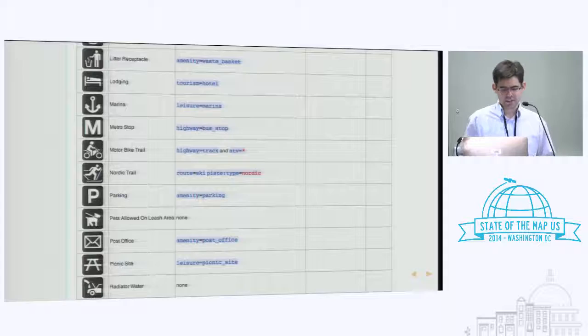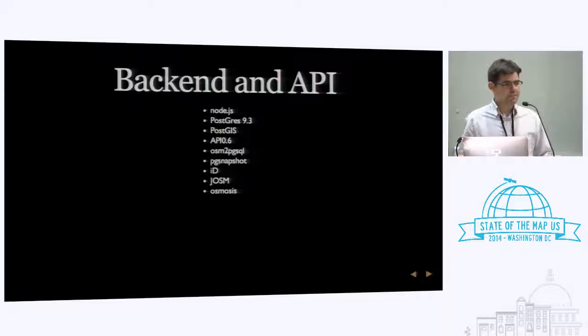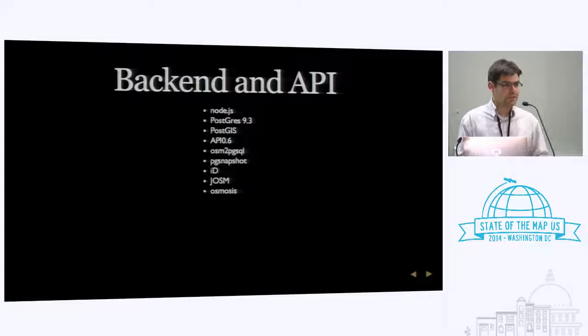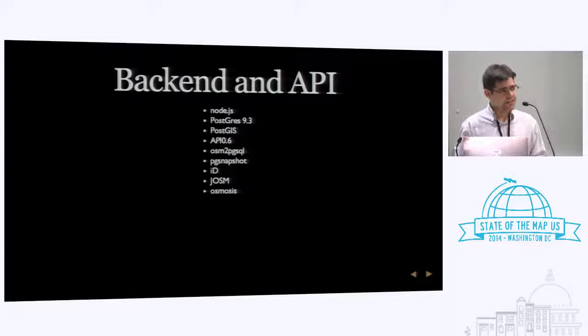So I want to talk about the whole backend for this. We created it using OpenStreetMap infrastructure, just like the USGS project. We wrote ours in Node.js and it still uses the same API. We did that because there are so many great tools out there for OpenStreetMap — we can use the iD editor, probably Potlatch, and we used JOSM.